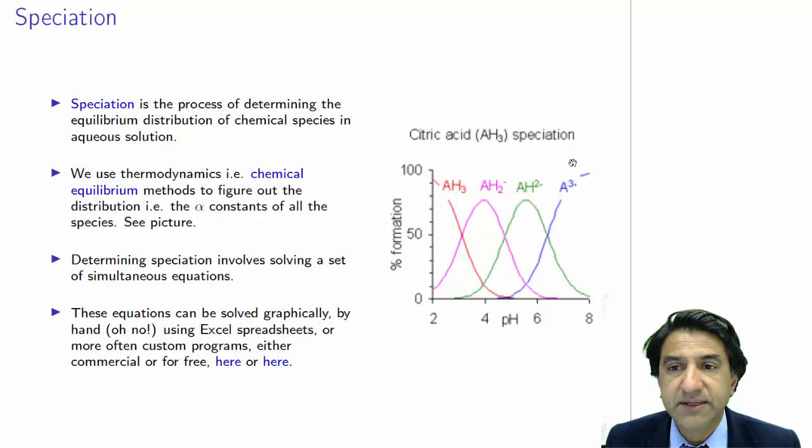This is citric acid, AH3, and we have a percentage amount, and we plot that against pH. We don't have to always plot it against pH, but pH, or H-plus concentration, is the main control variable for these equilibria.